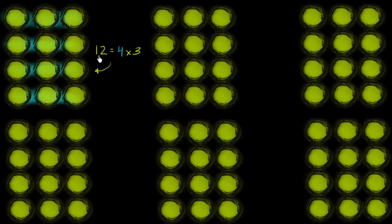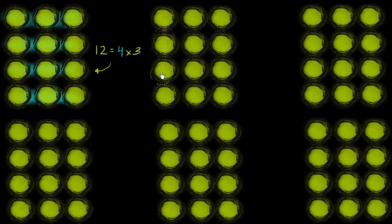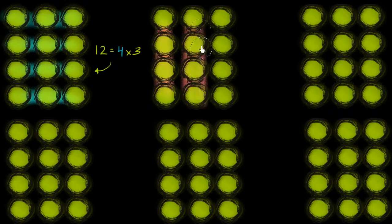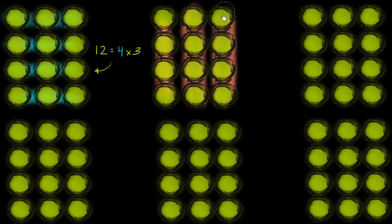But that's not the only way we can get to 12. We could also view it as 3 groups of 4. So let's look at that. We could have 1 group of 4, 2 groups of 4, 3 groups of 4.